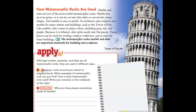How metamorphic rocks are used: marble and slate are two of the most useful metamorphic rocks. Marble has an even grain so it can be cut into thin slabs or carved into many shapes, and it is easy to polish. Architects and sculptors use marble for statues and buildings, such as the Tower of Pisa. Like marble, slate comes in many colors including gray, red, and purple. Because it is foliated, slate splits easily into flat pieces used for roofing, outdoor walkways, and trim for stone buildings.